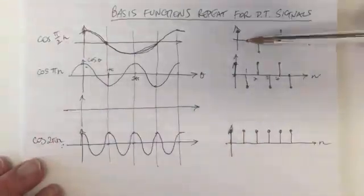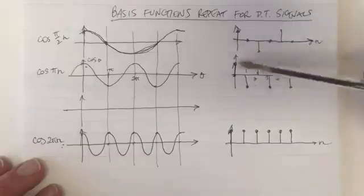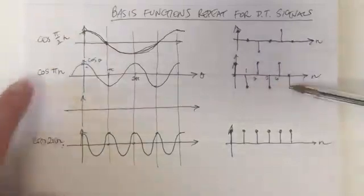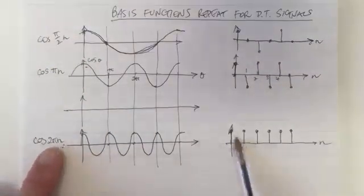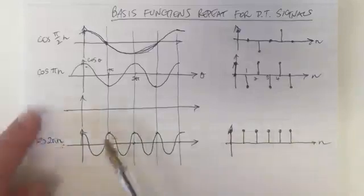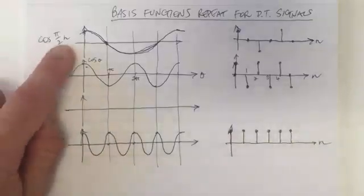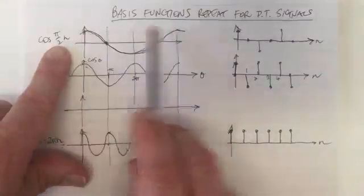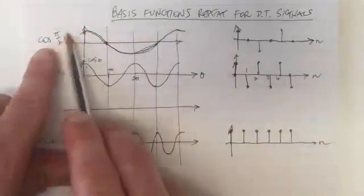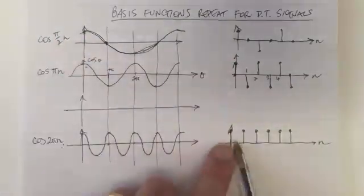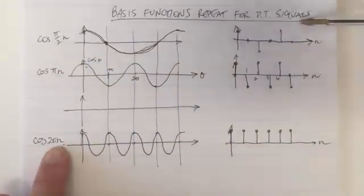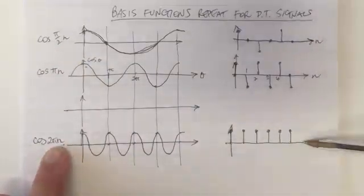We can see cos(π/2 · n) starts at 1, goes to 0, then minus 1. cos(πn) is getting faster — double the frequency — switching between plus and minus. cos(2πn) is constant. What would cos of 0 be? A zero frequency waveform would be exactly the same as cos(2πn) — so cos(0) is the same as cos(2π) in discrete time.